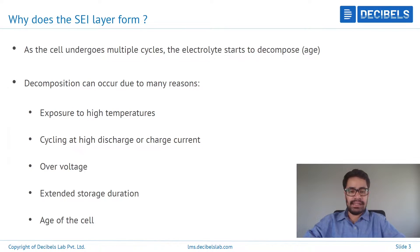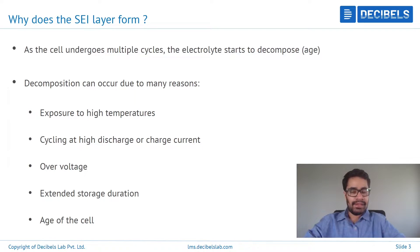So why exactly does the SEI layer form? It forms because of electrolyte decomposition, and this decomposition can happen because of many reasons. Some of the most important reasons include exposure to high temperatures, or thermal abuse; cycling at high discharge or charge rates, which can cause rapid decomposition of the electrolyte; overvoltage, or using the cell beyond the specified voltage limits; and extended storage duration, especially at elevated temperatures, which can cause the electrolyte to break down.